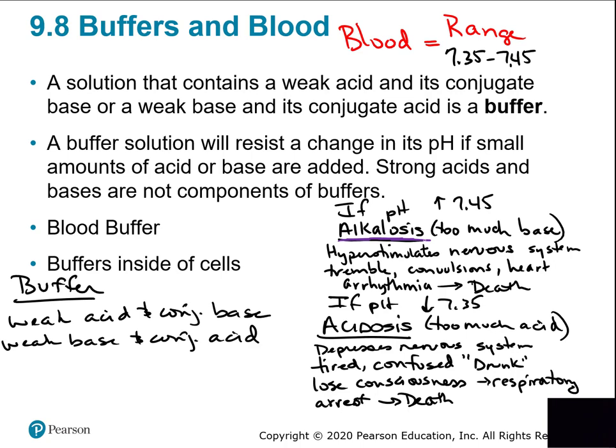The number one way the body regulates pH is through buffers. Buffers are a weak acid and its conjugate base, or a weak base and its conjugate acid — a pair of molecules found in all solutions. Your blood has a buffering system, your cells have a buffering system, and even your saliva has buffers. Pretty much all body fluids have a buffering component.